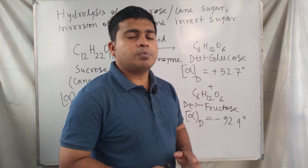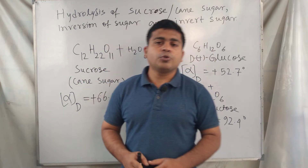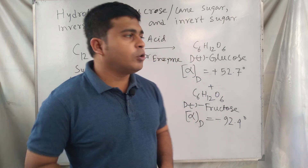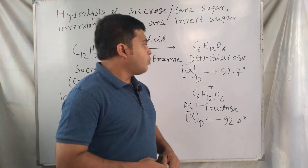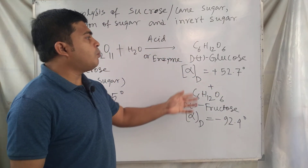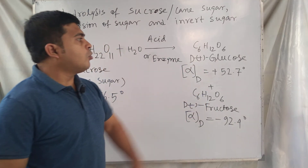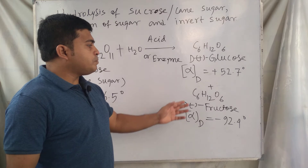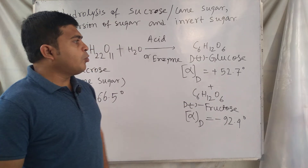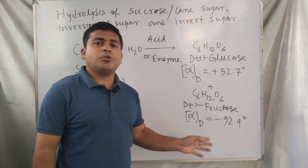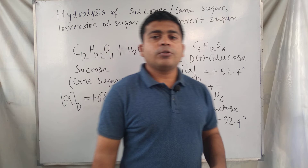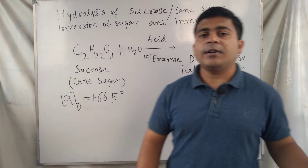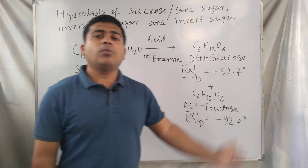Sucrose is a disaccharide — on hydrolysis it produces two different types of monosaccharides: glucose and fructose. The rotation changes from dextrorotatory to levorotatory, where sucrose is dextrorotatory and the resulting mixture becomes levorotatory.